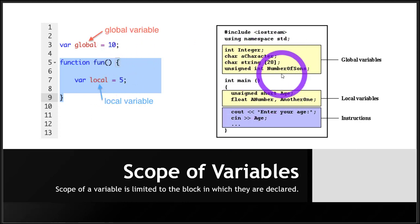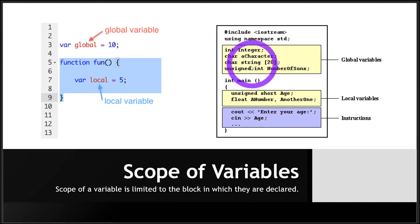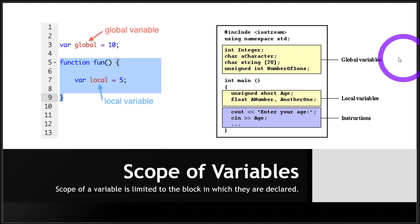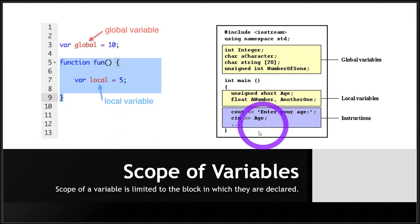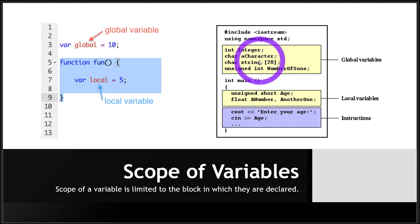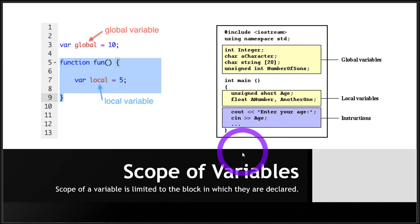Let's take another example right here. These are four variables which we have defined before the main program. Variables defined before the main program are global variables, meaning they can be accessed from outside the main and from inside the main. If we define a function somewhere outside the main, these four variables will be accessible from within the main function and from that function as well.